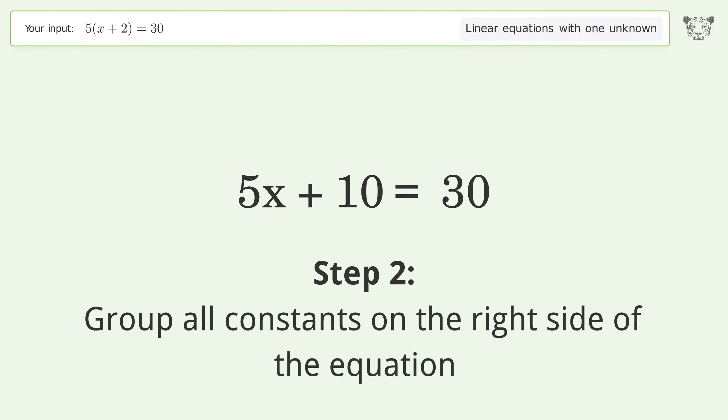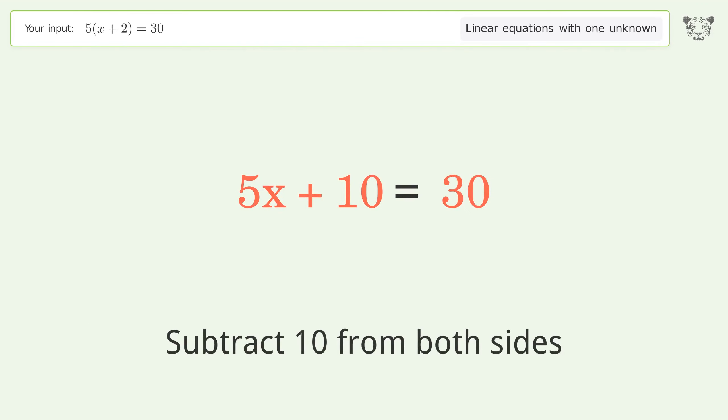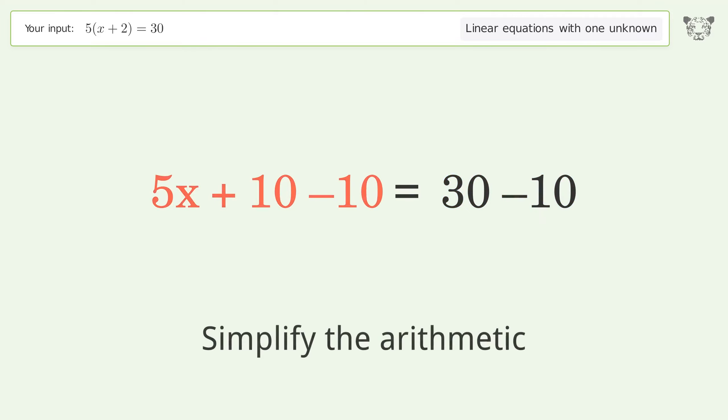Group all constants on the right side of the equation. Subtract 10 from both sides. Simplify the arithmetic.